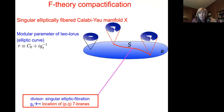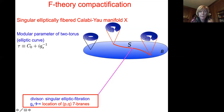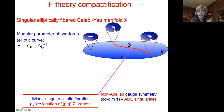The way we detect charged degrees of freedom in this compactification is by identifying the type of singularities encountered in these constructions. In particular, along a divisor — codimension one in the base — when the elliptic fibration degenerates, this signifies the appearance of a seven-brane, specifically non-perturbative D(p,q)-7-branes. The type of singularity along this divisor determines the nature of the gauge symmetry, associated with so-called ADE singularities.